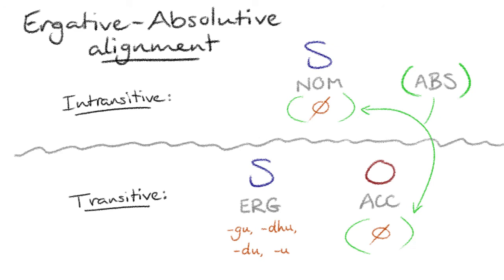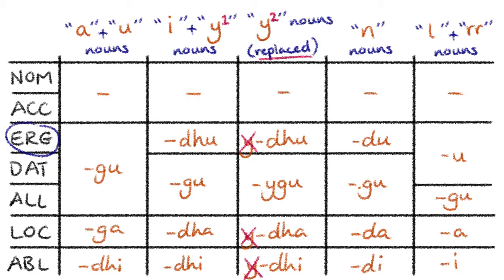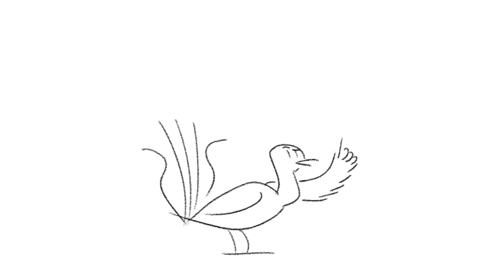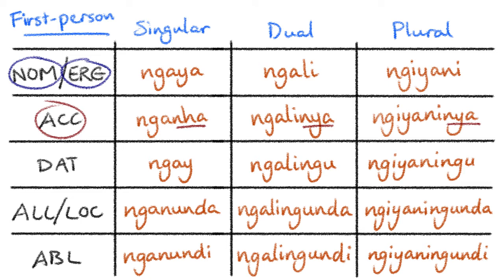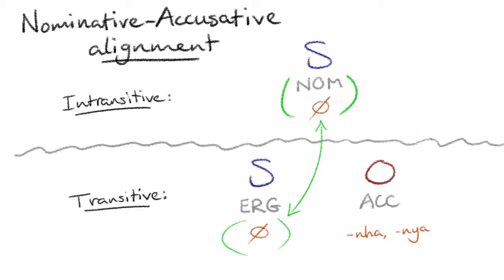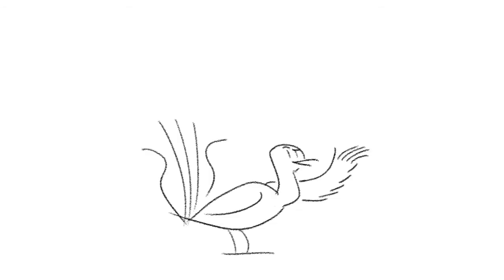Like most Pama-Nyungan languages, Gamilarai is regarded as an ergative-absolutive language, where only the subject of transitive clauses is inflected, but the subject of intransitive clauses and the object of transitive clauses is not. However, this is only true for nouns and third person pronouns in Gamilarai. The first and second person pronouns, on the other hand, are marked in a nominative-accusative alignment, where the accusative form is marked but the nominative and ergative are not. I just thought that was interesting.